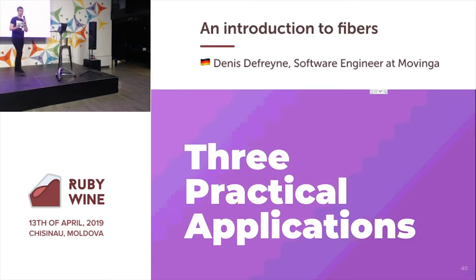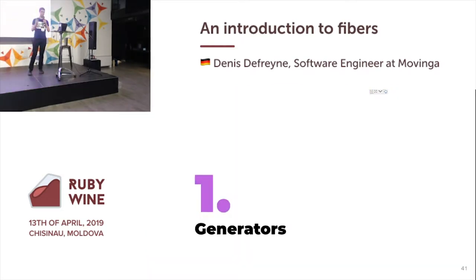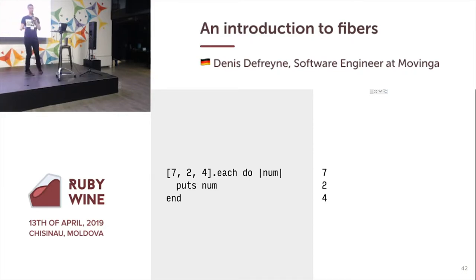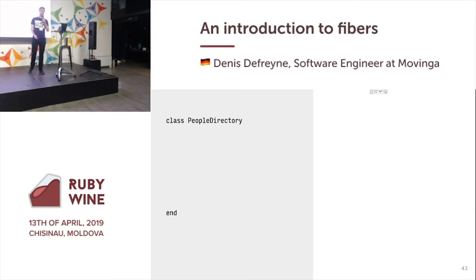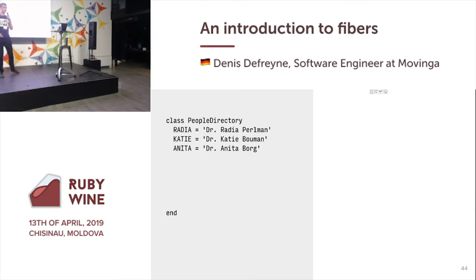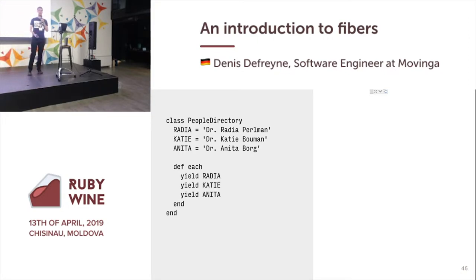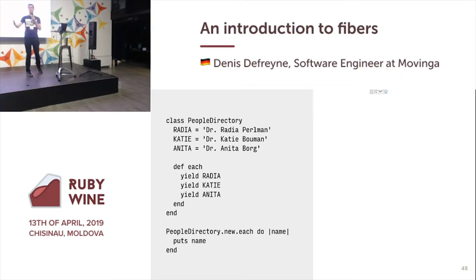I have three practical applications for you. The first one is generators. Ruby has arrays; you can iterate over them using the each method, passing a block that will be executed for every element. Now arrays are not the only enumerable thing — you can also make anything enumerable. For example, I can create a people directory where I define some constants for some inspirational women in computer science, then implement an each method which will successively yield those constants. I can create my people directory and call each on it, pretending that it is an array even though it isn't, and print each element.